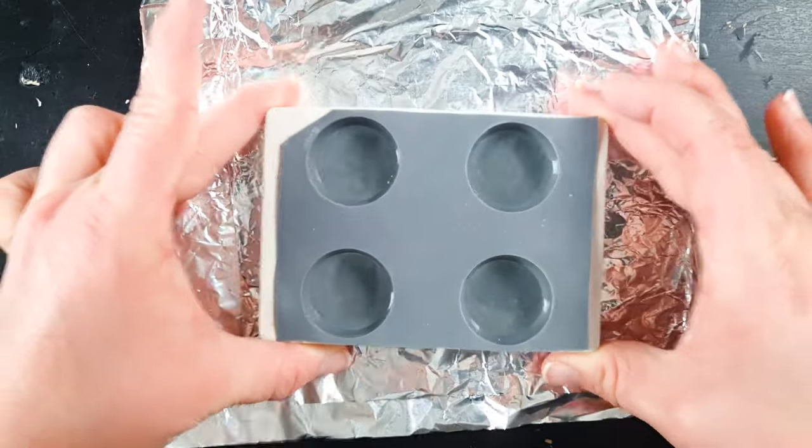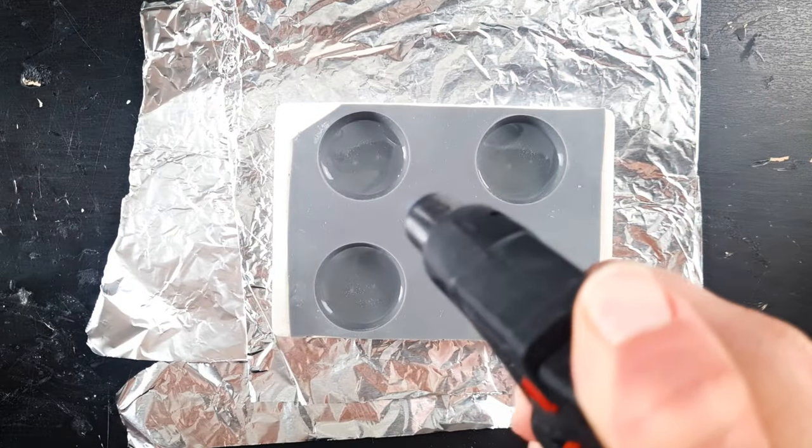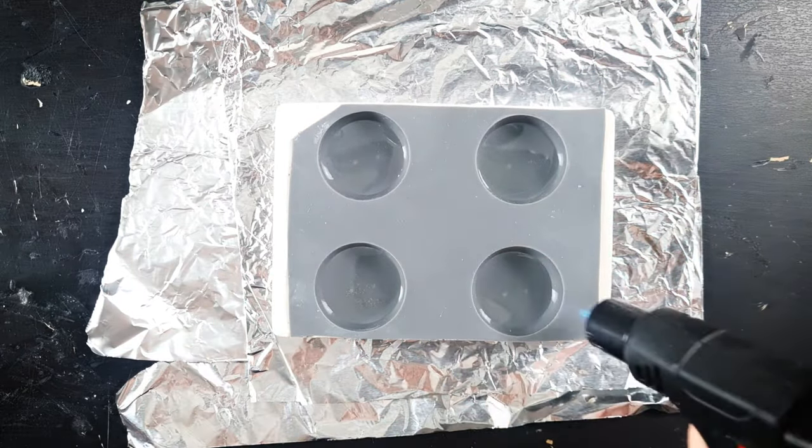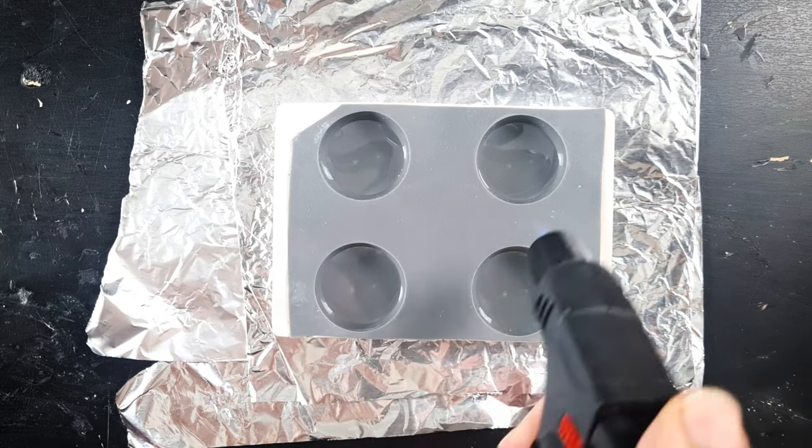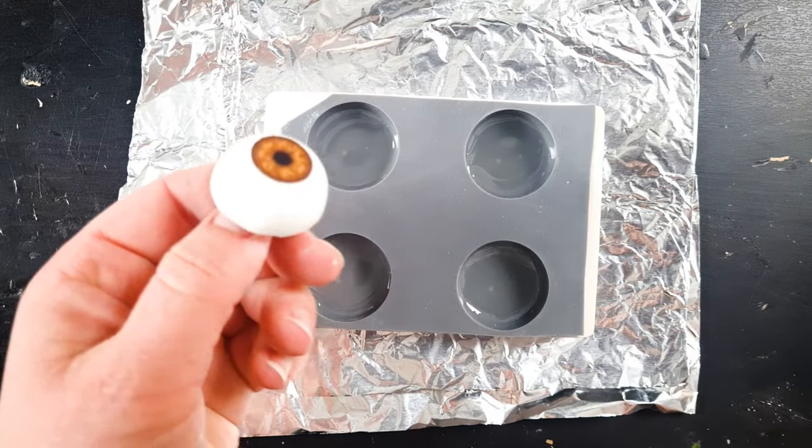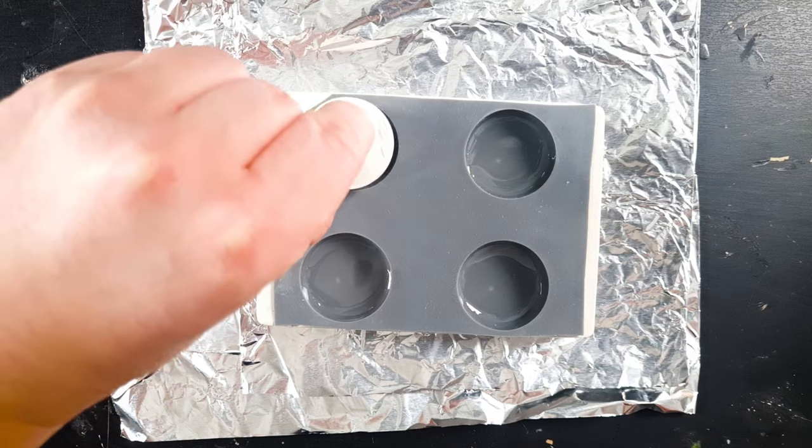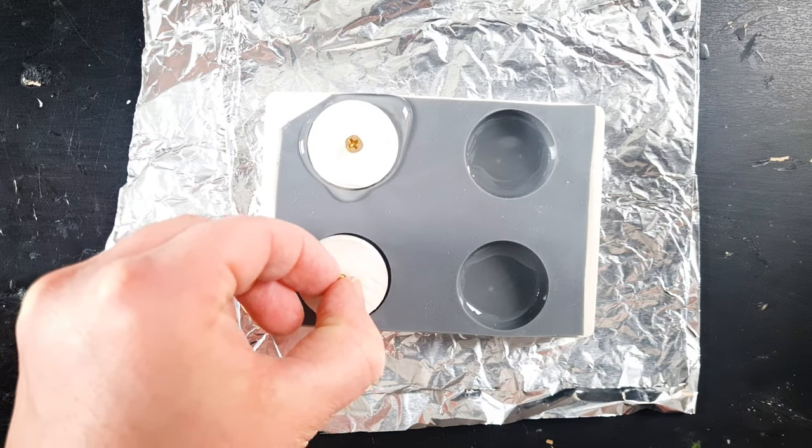I tap the mold gently to bring any air bubbles to the surface and then I use the heat from my blowtorch to eliminate those tiny bubbles. Now the eyeballs are ready for that coating and this is when that little screw handle comes in really handy.